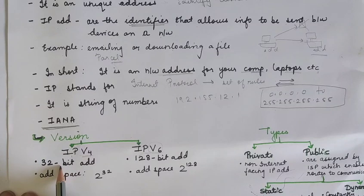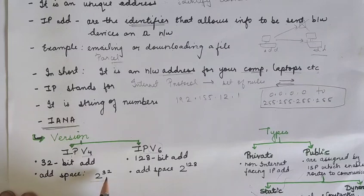It is nothing but a 32-bit address. It is unique, universally used for defining the connection of the devices like your computers and routers. The address bits are 32-bit long. And how many address space we can have for the IPv4 is 2 raised to 32.